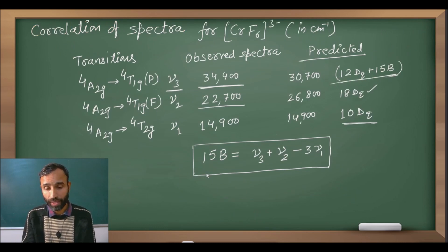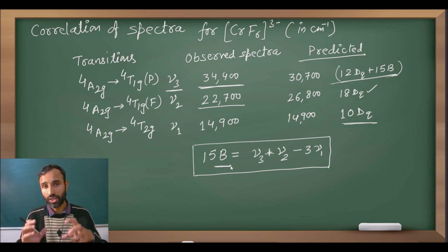So 12Dq plus 15B. So 15B is equal to nu 3 plus nu 2. So it is 30Dq. If we minus 30Dq, it comes out to be 15B. So nu 3 value plus nu 2 value minus 3 nu 1, then in this way we can calculate B when there is no mixing.